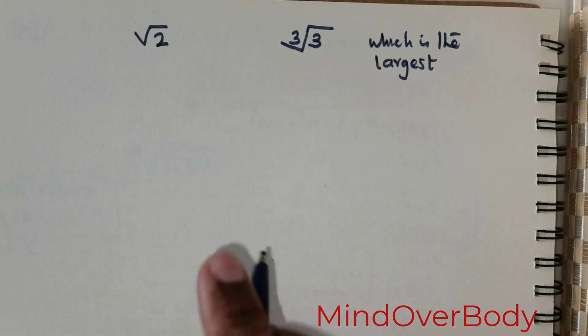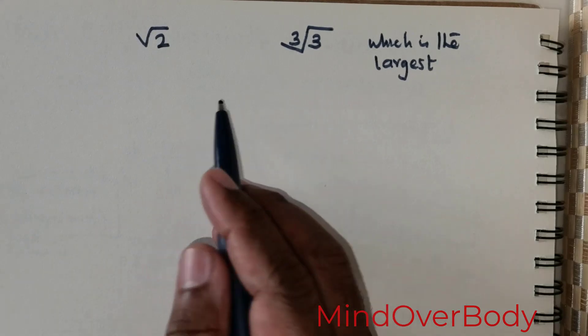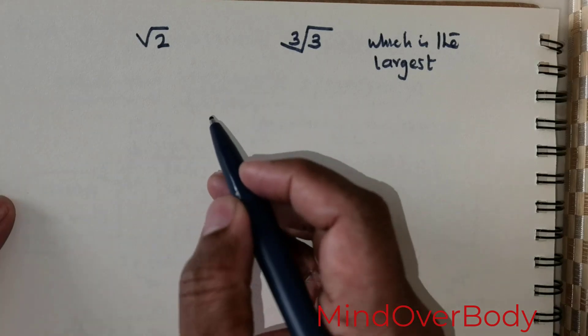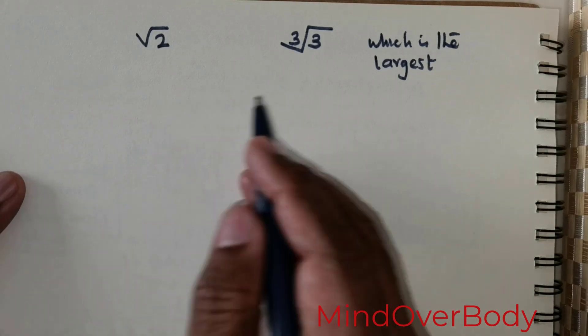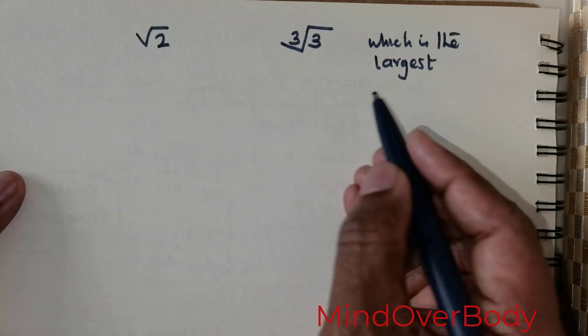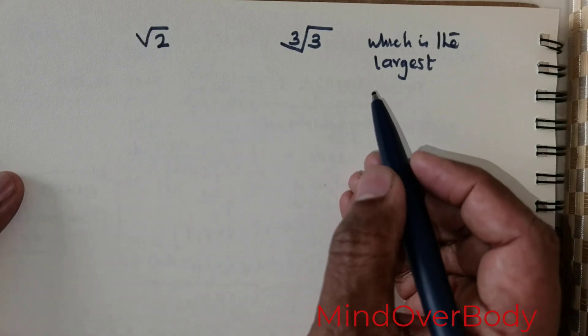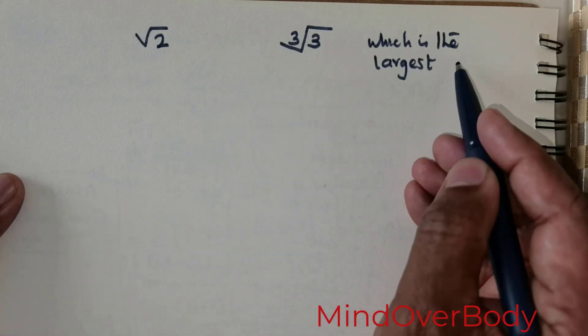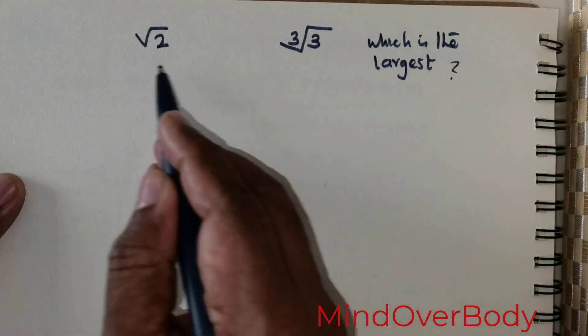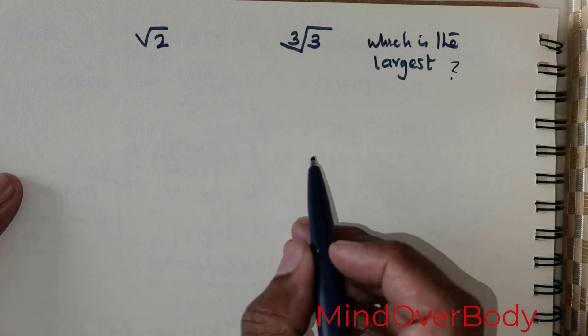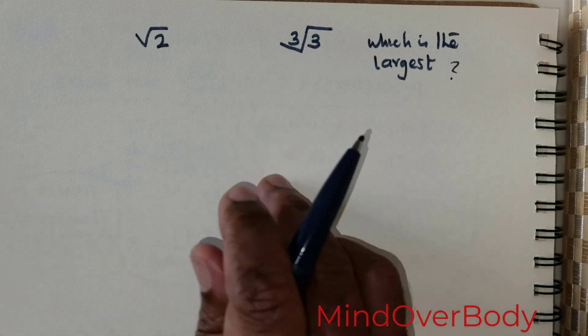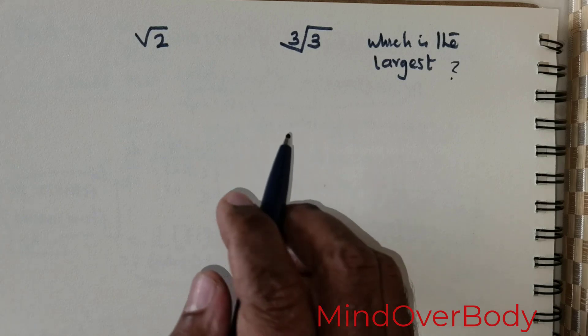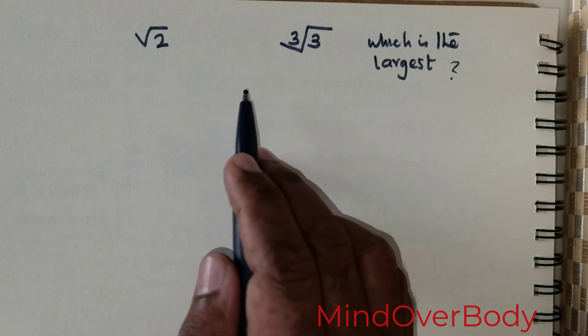Welcome students. In this class we will learn to do this particular question. This is a Cambridge University interview question and a student or prospective student is expected to answer this question. The question wants you to find which of these two numbers is the largest, and the irony is that 90% of the time the candidates always chose the wrong answer.